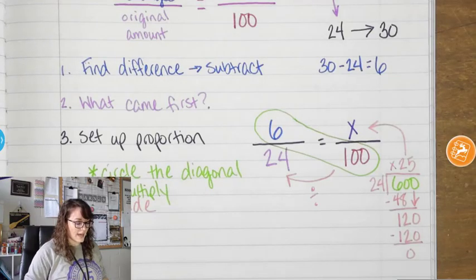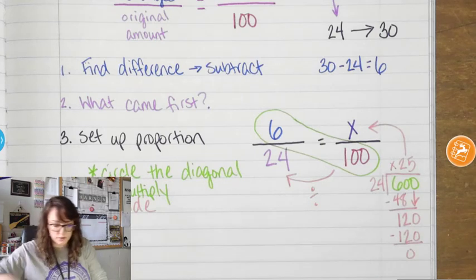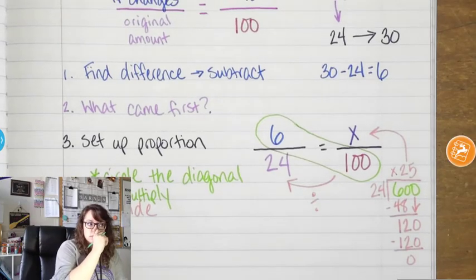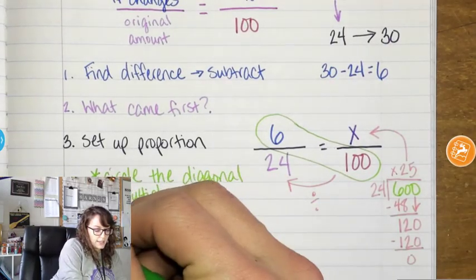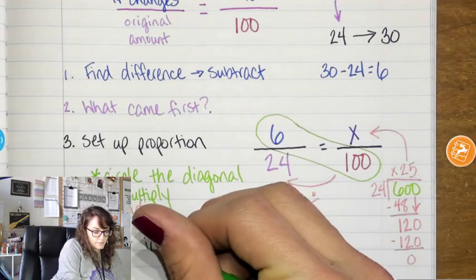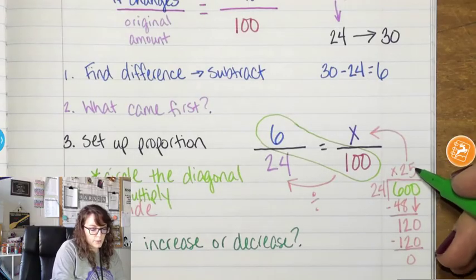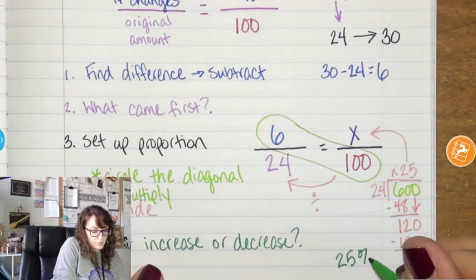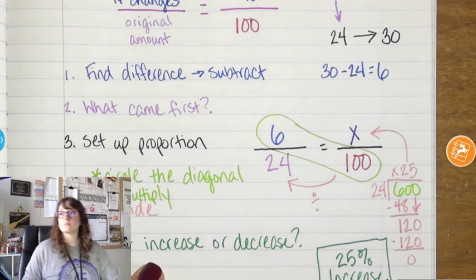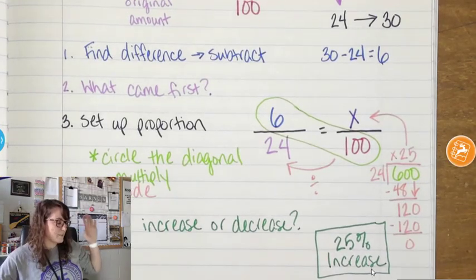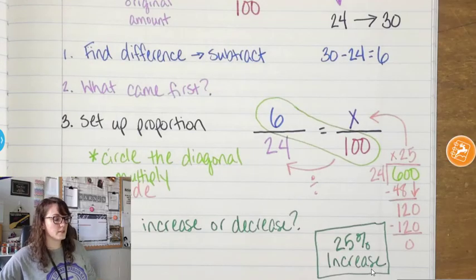I'm not quite done — the last step is super easy. The last thing you have to do is tell me if it went up or down. So what did it start at? 24 — and then it went up. So your last step: did it increase or decrease? Increase. This one was an increase, so it's a 25% increase. That's a basic straightforward one. Find the difference, cross multiply, divide.